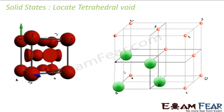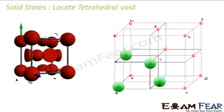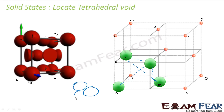Now I want to find the tetrahedral void. Take four of these atoms — atoms 1, 2, 3, 4 — these four will form a tetrahedral void. It will look something like this: three atoms are sitting very close together at the base, almost no space between them, and on top there is one more atom. There is a small space here, and that is my tetrahedral void.